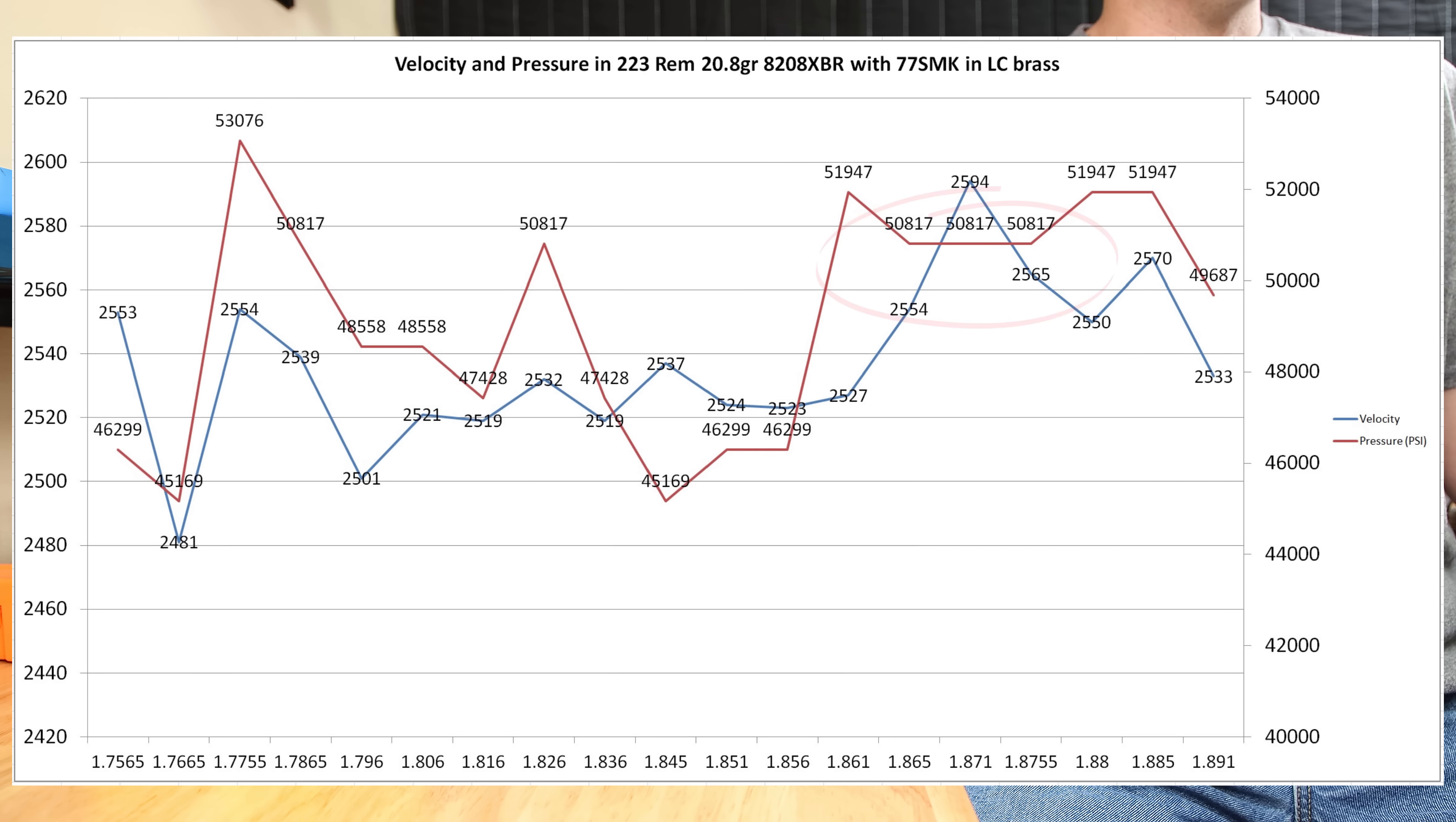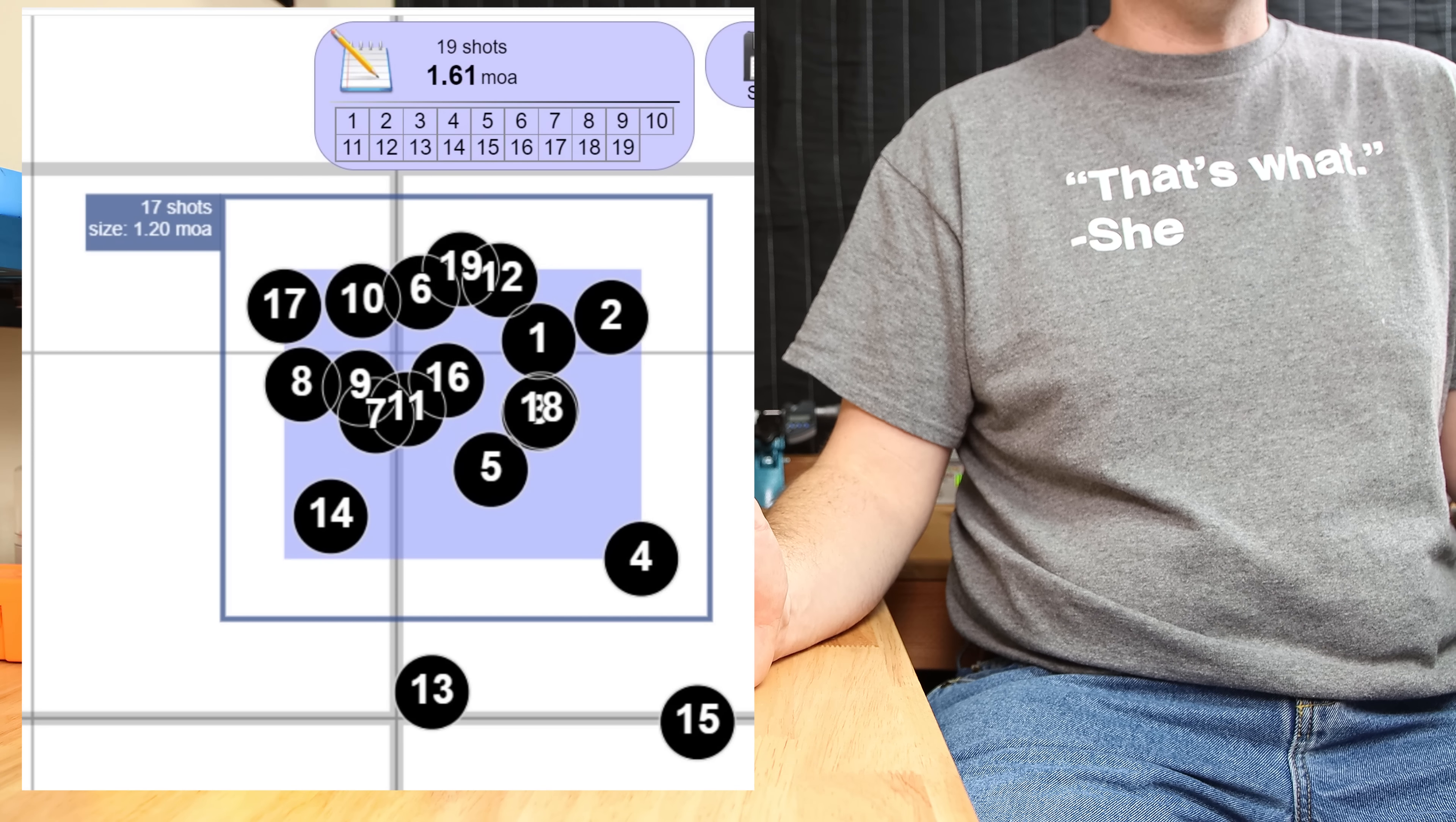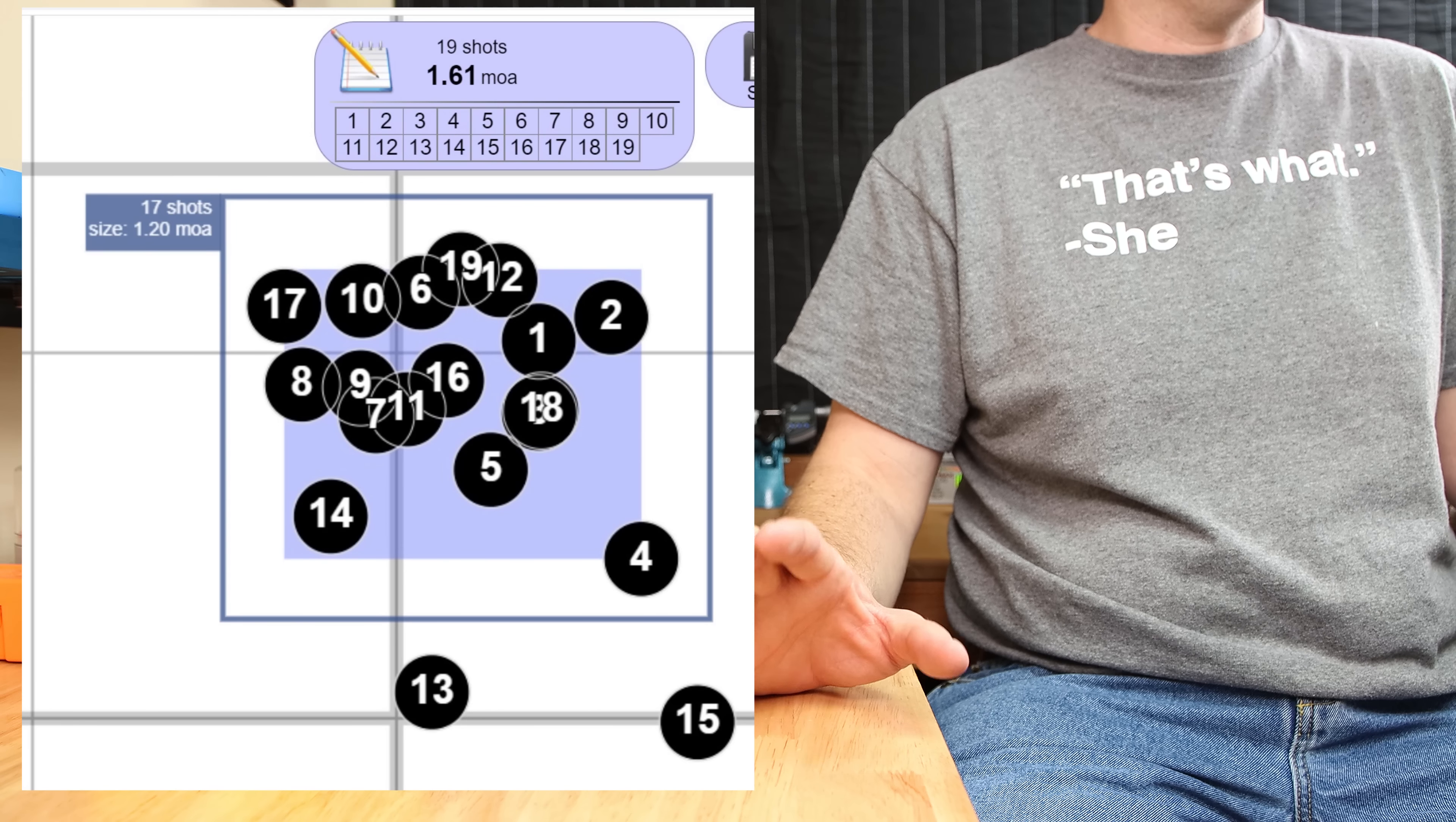Looking at our chart, these two rounds seem to be right in that area where we start to see the pressure increase from starting into the lands. And the rounds right after that seem to get right back into the group. So, be aware if you're thinking about doing this, that's probably an area to avoid.